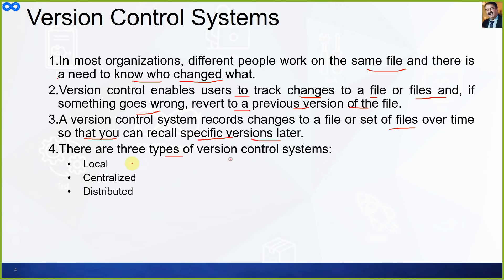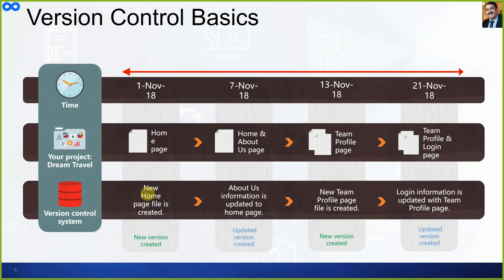There are three types of version control systems: local, centralized, and distributed. Version control basics: as an example scenario, on November 1st, 2018, your project team working on 'Dream Travel' created a home page — a new file is created and a new version is recorded.